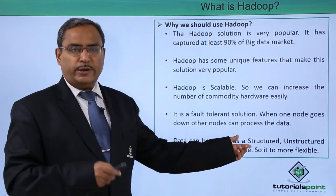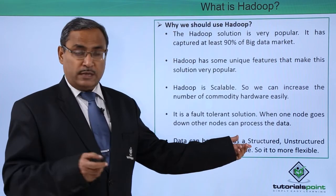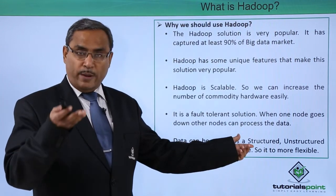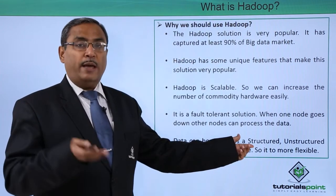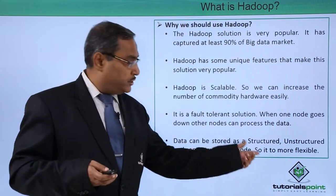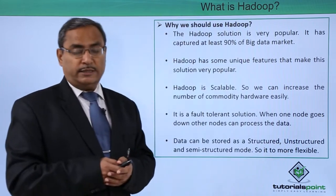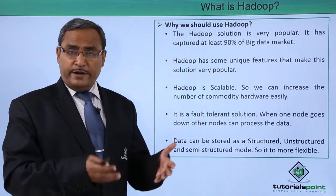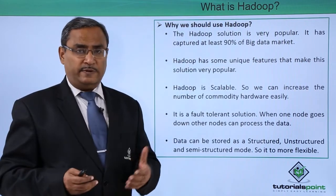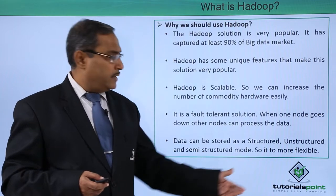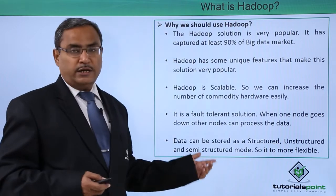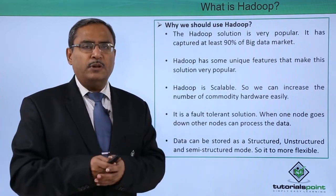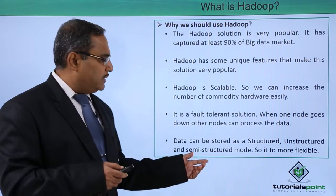In structured data, we represent data in rows and columns — a database is a good example. Sources include web logs, machine-generated data, and sensor data. Unstructured data means the data is not structured — examples include text files, PDFs, videos, images, satellite images, and machine-generated data. Semi-structured data is something that is to some extent structured and to some extent unstructured — examples include XML files and JSON files.